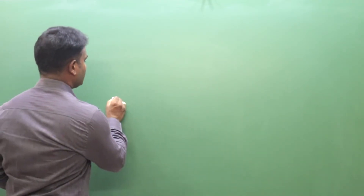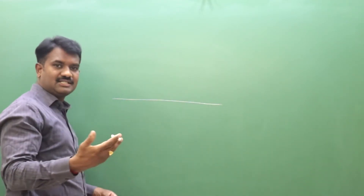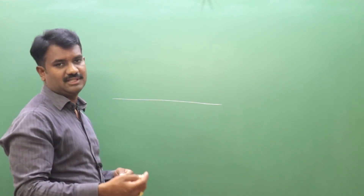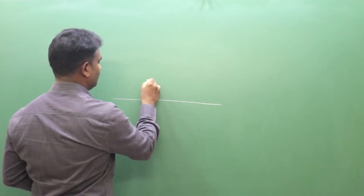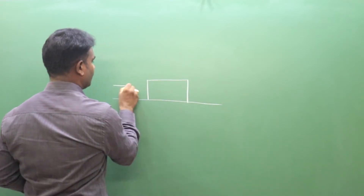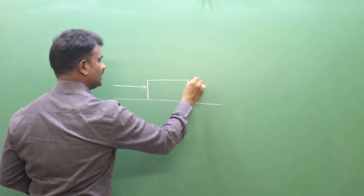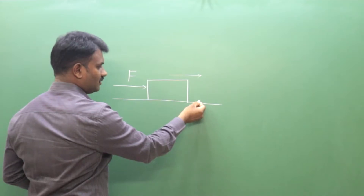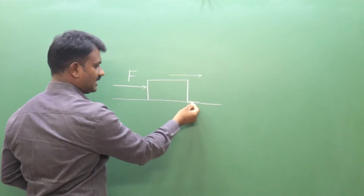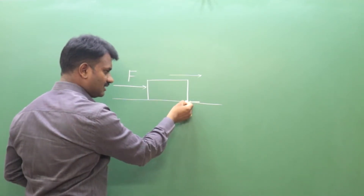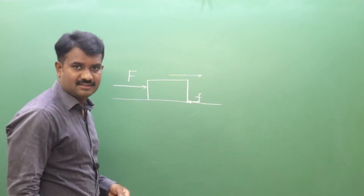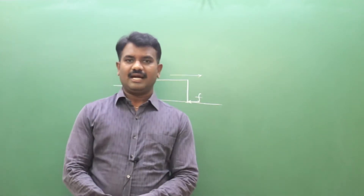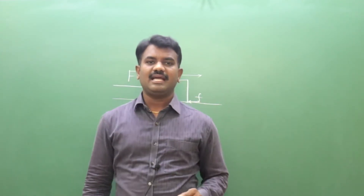The second point is that friction always acts tangential to the surface and in the direction opposite to the motion of the object. For example, if a block is moving in one direction due to an external force, the friction always acts in the opposite direction, tangential to the surface. That is the second important point.